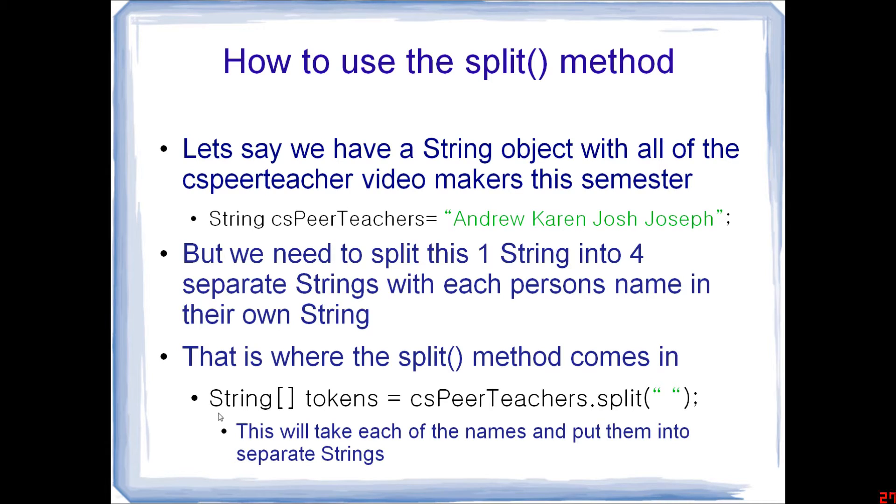Right here, we have the example of this split method that we would need to use. String tokens equals CSPeerTeachers.split, with a space as the delimiter. So this will take each of the names, and put them into separate strings. So let's try that right now.